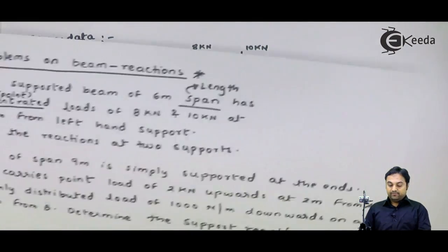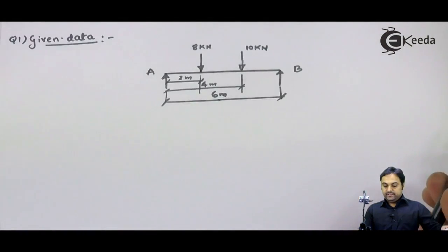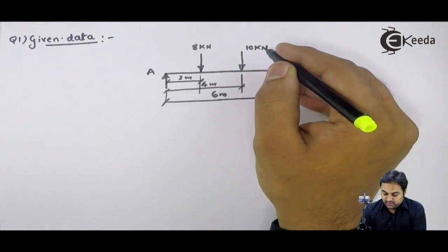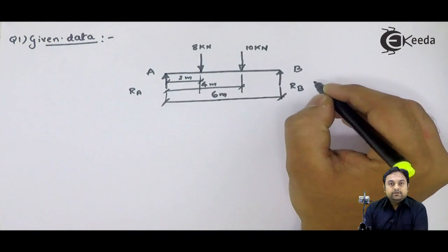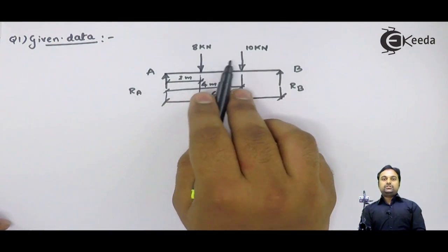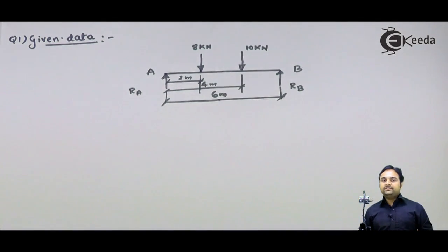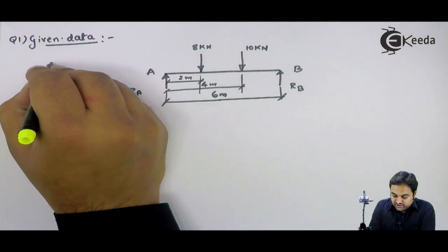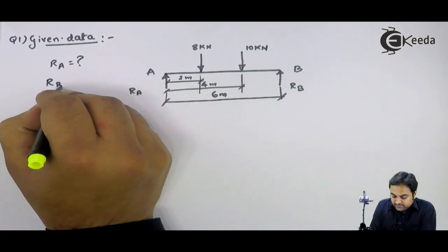We have to find the reactions at the two supports. Because of the action of these forces, we get a reaction at A and a reaction at B, since the loads are carried by these two supports. So our goal is to calculate RA and RB.